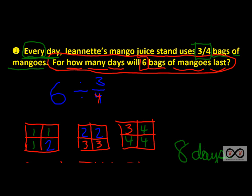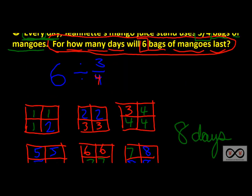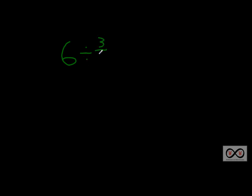Now we'll look at the mathematical method. We have the same information: six divided by three-fourths. This is essentially the same as six over one, since every whole number can be represented as a fraction with one as its denominator — six divided by one equals six. So we have six over one, divided by three over four.